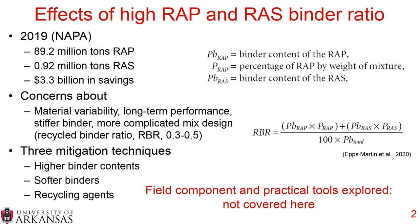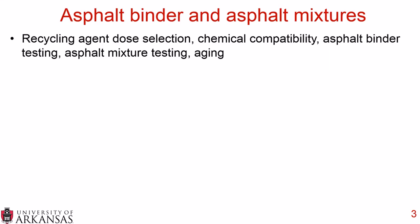NCHRP 9-27 had a very strong field component and explored multiple practical tools, but those won't be covered here. Instead, we're going to focus on laboratory asphalt binder and asphalt mix testing. The project performed a plethora of tests with a multitude of materials, including recycling agent dose selections, chemical compatibility between the asphalt binders and the recycling agents, various asphalt binder tests, various asphalt mixture tests, and extensive aging protocols.